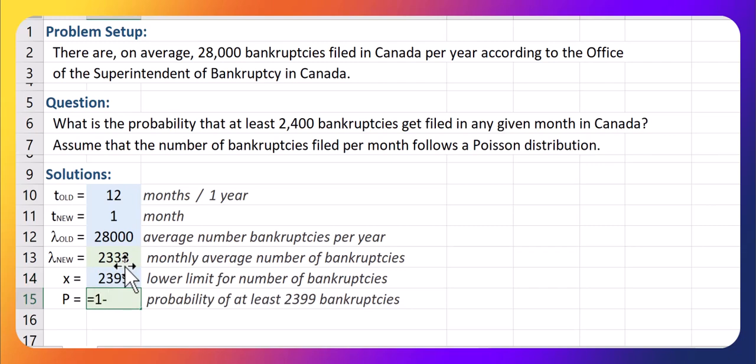So now we're going to do a complement. So 1 minus Poisson distribution, because if we want the probability of at least 2,400, instead we get the probability of at most 2,399 and subtract that from 1.